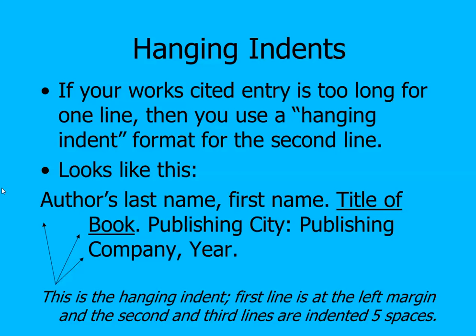It looks like this: author's last name, comma, first name, title of the book — this is just an example for a book. You see here everything after the first line is indented. The reason for this is that it allows the reader to quickly see what belongs to the first line and what signifies a new entry. Every new entry will start justified to the left on the paper, so you can quickly tell which entry is which.